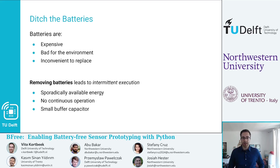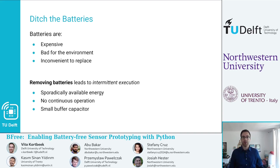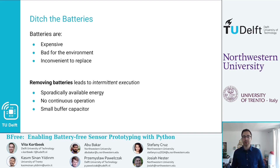We want to ditch the batteries. Batteries are expensive, bad for the environment, and very inconvenient to replace. But removing batteries is not that simple because we need to replace the energy source with something. We want to replace it with harvested energy, but harvested energy is sporadically available — it's not always there, and even when it is, there may not be enough of it to run the system continuously.